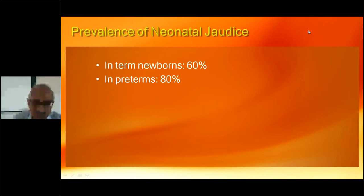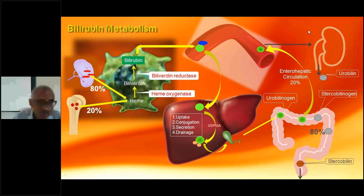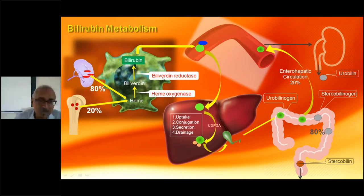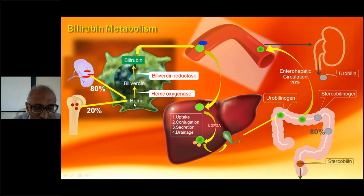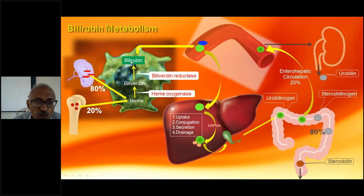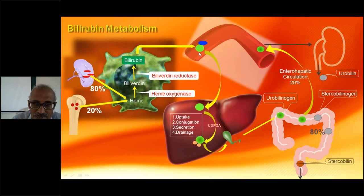The basic bilirubin metabolism: the heme in RBCs is destroyed inside the spleen, which is the source of about 80% of bilirubin. Some bilirubin comes directly from the bone marrow and other areas, roughly 20%. The heme released from hemoglobin reaches the reticuloendothelial cells, mostly in the spleen. By the action of heme oxygenase enzyme, heme is converted into biliverdin, and then in the presence of biliverdin reductase, it is converted to bilirubin.